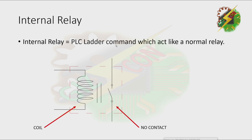For internal relay, it is a PLC ladder command which acts like a normal relay. For a normal relay, we have a coil and contact. For this example, we have a normally open contact. When the coil is energized, the contact will be closed.